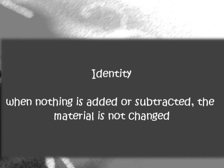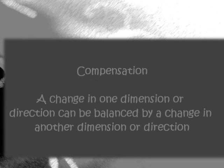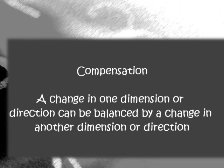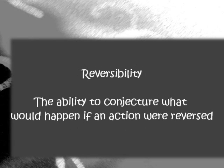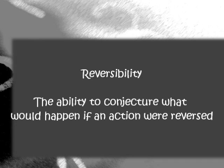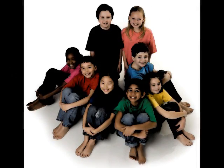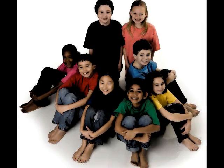Identity: when nothing is added or subtracted, the material is not changed. Compensation: a change in one dimension or direction can be balanced by a change in another dimension or direction. And reversibility: the ability to conjecture what would happen if an action were reversed. When teaching children in this stage, it's important to remember that they still cannot deal with abstract concepts, and that we should still use concrete objects and visual aids to help them.